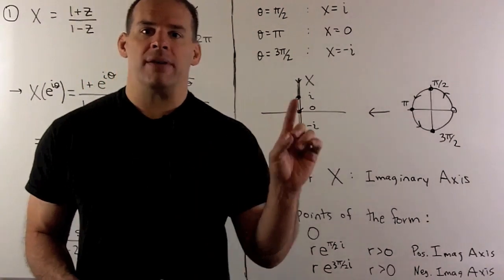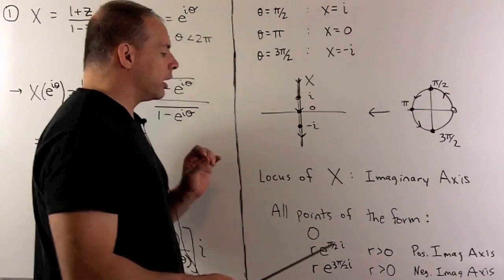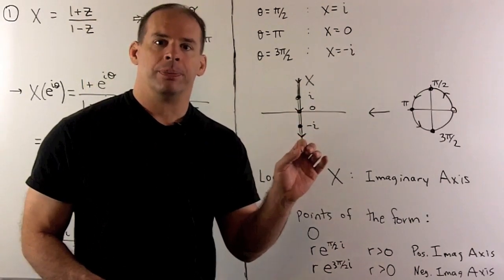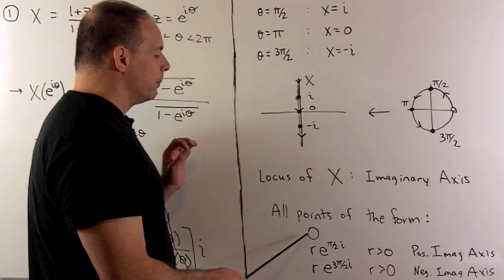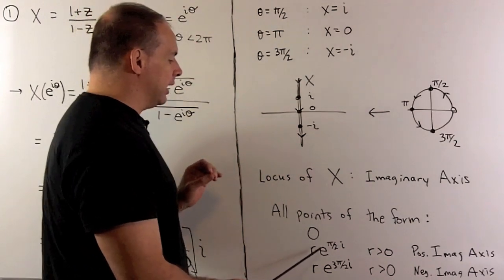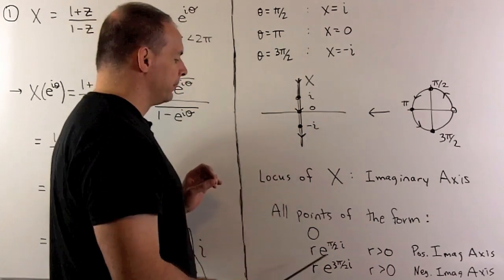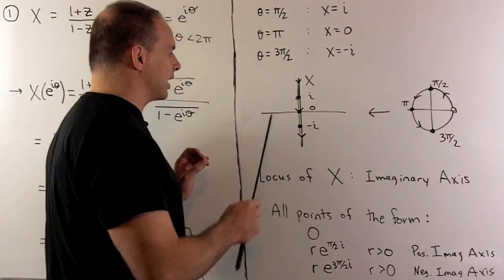When I apply De Moivre's theorem, we're going to need to write things in the form r e to the i theta where r is greater than or equal to 0. We're going to have three pieces: 0, r e to the pi halves i for the upper part of the axis, and r e to the 3 pi halves i for the lower part of the axis.